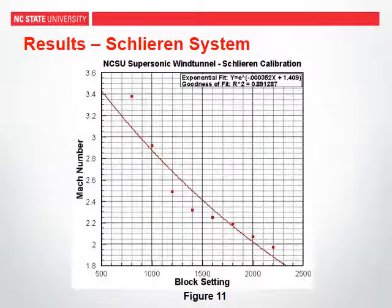The Mach numbers determined from the Schlieren system are plotted in the same manner as the previous figures. Shown in figure 11 is the Schlieren calibration data with an exponential line of best fit, which has an R-squared value of 0.89. A noticeable difference compared to the pressure calibration is the constant increase of Mach number with respect to block setting, whereas figures 9 and 10 showed an unexpected decrease in Mach number occurring at a block setting of 800.